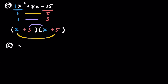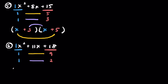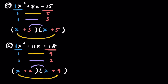Problem 6: x squared plus 11x plus 18. Leading coefficient of 1, positive 18. I'm going to pick 9 and 2 — that makes sense since 9 plus 2 is 11. Pairing these up as outers and inners, then creating my empty binomials: (x + 9)(x + 2).